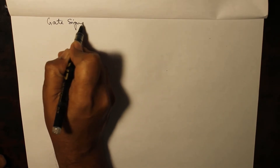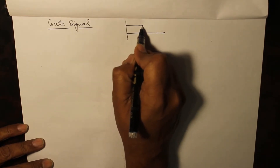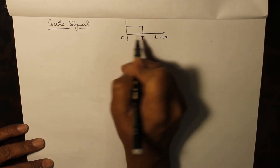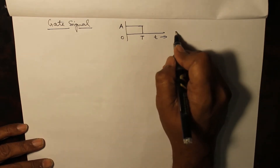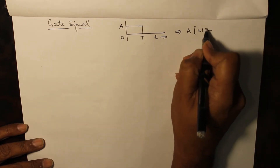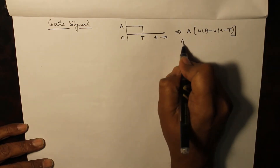We are at the end of the last slide of unit 1. Sometimes questions are asked in which you have to synthesize the waveform using a gate signal. A gate signal starts at t equal to 0, goes up to capital T, and has magnitude a. This can be represented as a·u(t) minus u(t minus T). For simplicity, a is taken as 1.